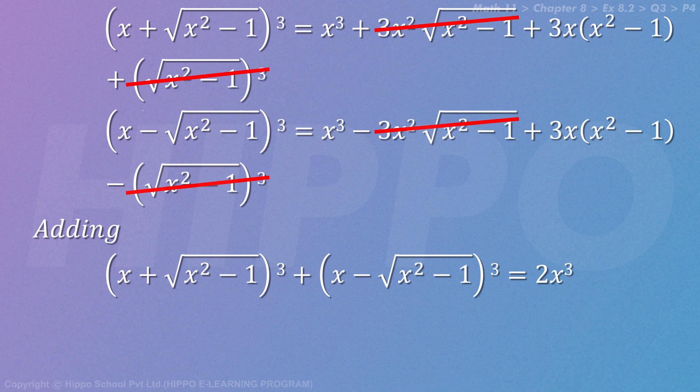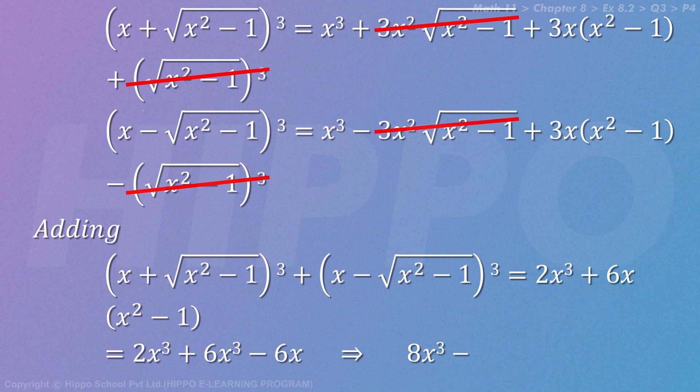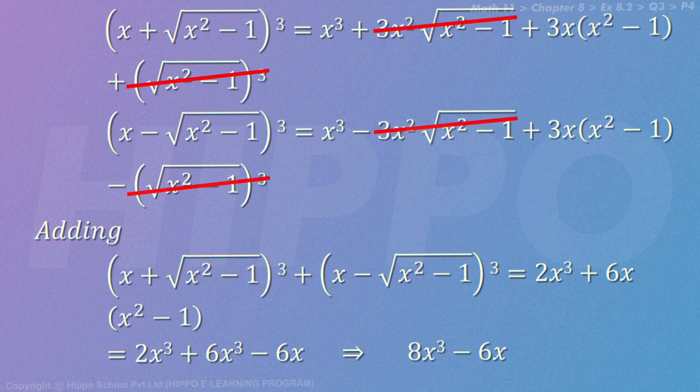So this will cancel out. x³ + x³ adds to 2x³. 3x(x² - 1) and 3x(x² - 1) add to 6x(x² - 1), which equals 2x³ + 6x³ - 6x. 2x³ and 6x³ add, so it becomes 8x³ - 6x.